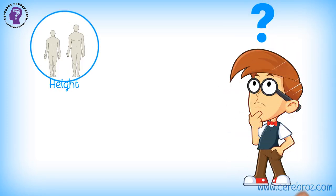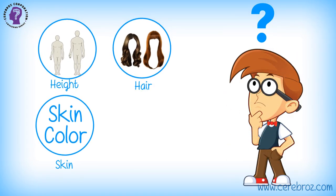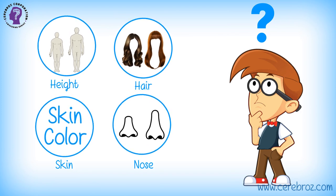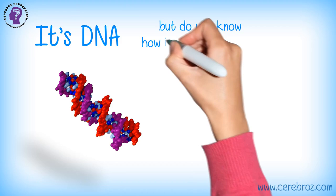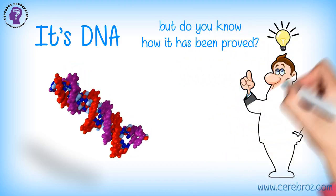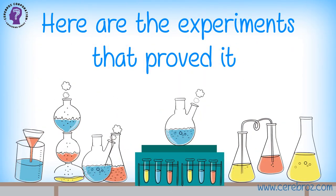Have you ever wondered what determines your height, hair, and skin color, and even the size of your nose? It's DNA, the genetic material of the cell. But do you know how it has been proved? Here are the experiments that proved it.